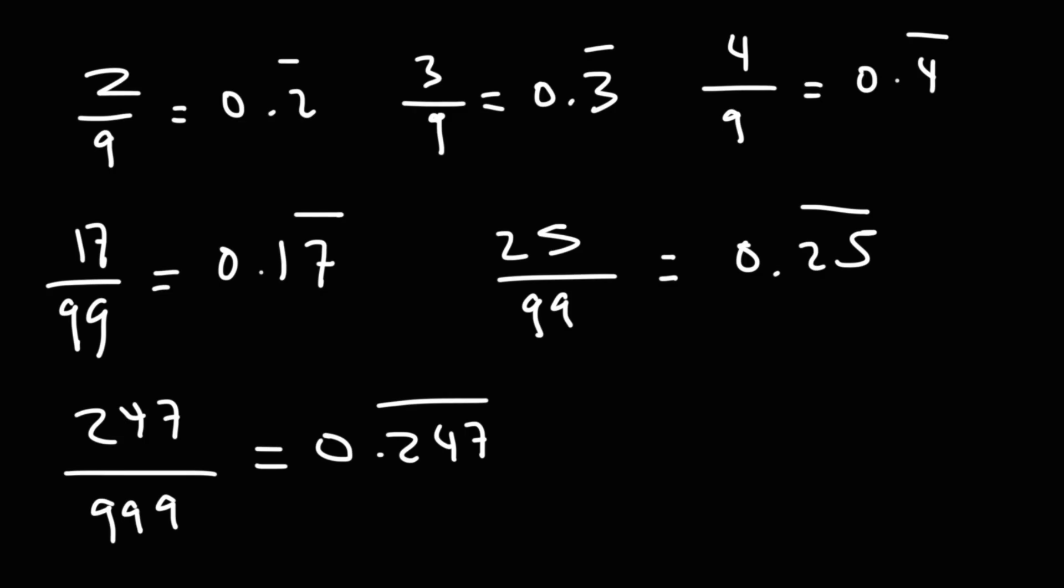Usually when you divide by 3, 6, or 9, typically you're going to have a repeating decimal. Just a heads up.